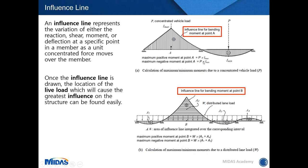For example, with an influence line diagram for a two-span continuous bridge, to obtain maximum flexure at point A at the mid-span of span one, you should only load the portion under positive influence — the triangular part over span one. Loading span two has a relieving effect for maximum positive or sagging moment at A. Influence lines can similarly be drawn for four-span continuous bridges.